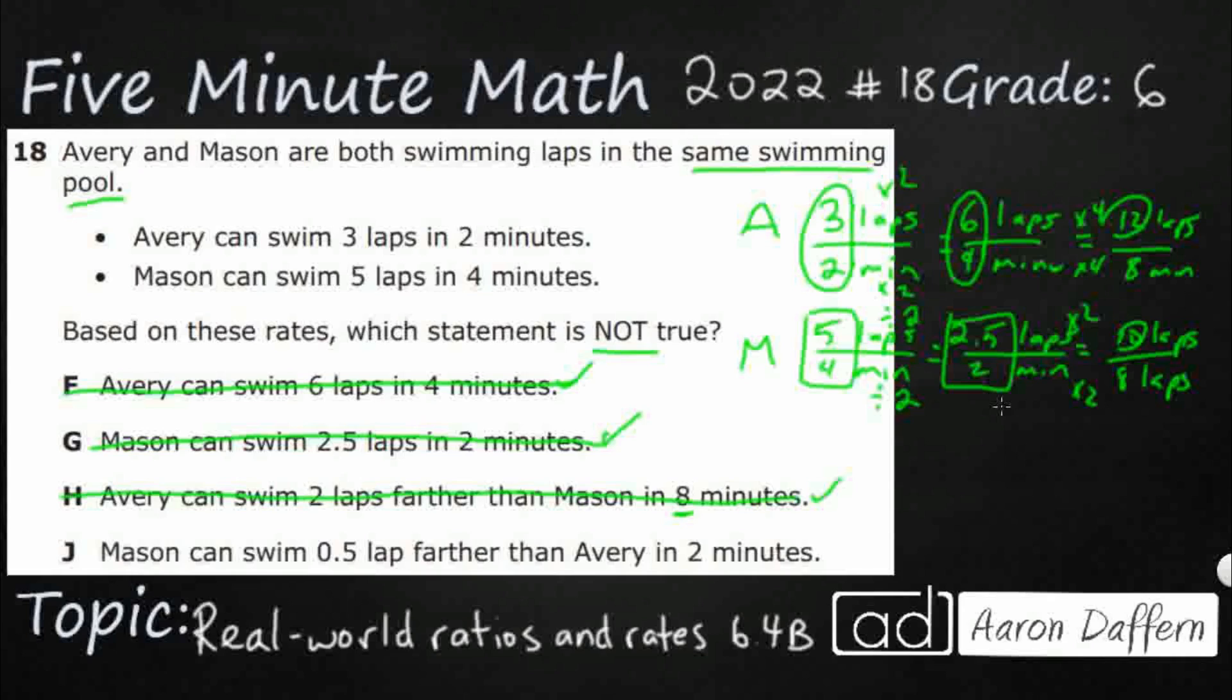Mason can swim 0.5 lap farther than Avery in 2 minutes. We need to get this down to 2. Avery is already in 2, and we got Mason to 2. Let's just get those down here. Avery, we had 3 laps to 2 minutes. And then Mason, we had this right here, we had 2.5 laps in 2 minutes.